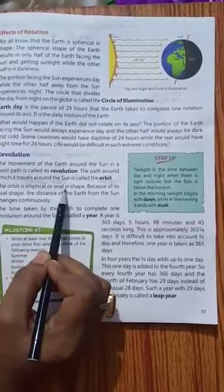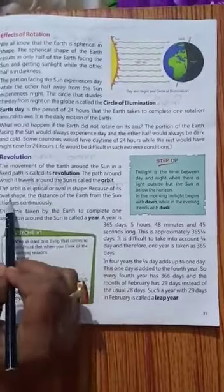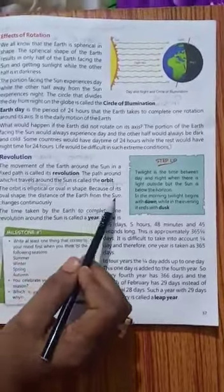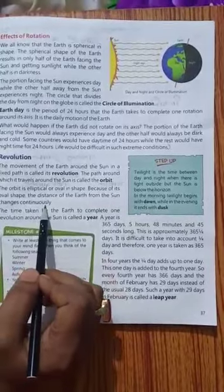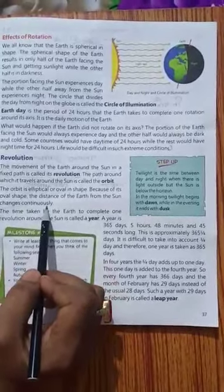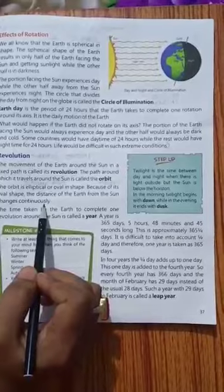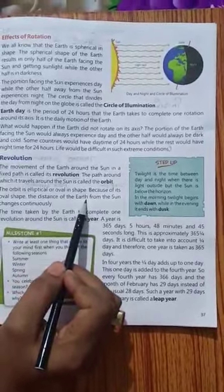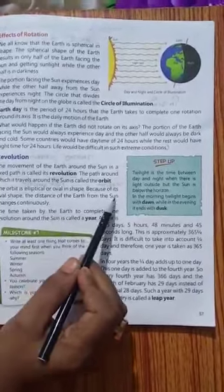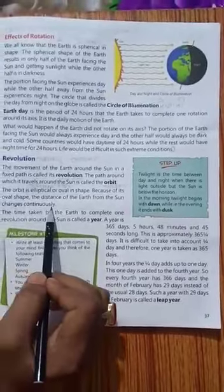Elliptical or oval in shape hai. Because of its oval shape, the distance of the earth from the sun changes continuously. Iske oval shape hone ke karan, jo earth ka distance hai sun se, woh changes hota rehta hai, continuously badalta rehta hai.